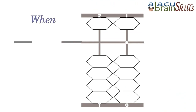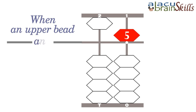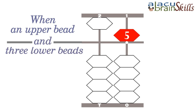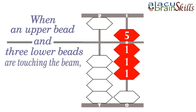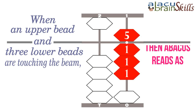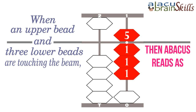When an upper bead and three lower beads are touching the beam, then the Abacus reads as 8.